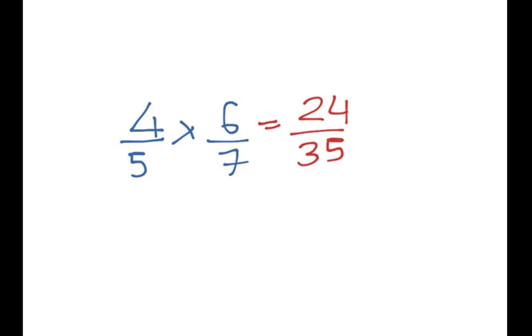Say, for example, we had another problem where we had to simplify. So I gave you 2 over 3, multiplied by 6 over 7. In this scenario, we would just do 2 times 6, which is 12. And we would do 3 times 7, which is 21.